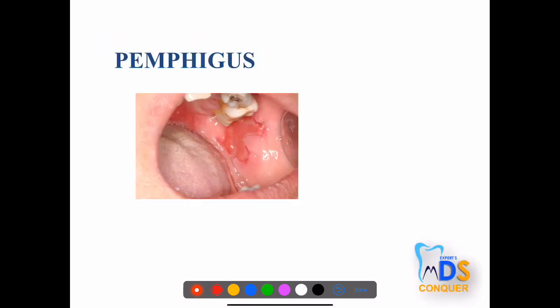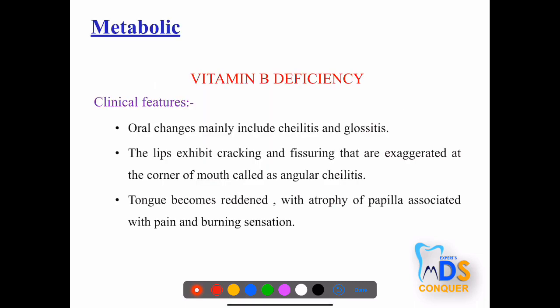Pemphigus shows flaccid bullae which rupture and leave an ulcerative lesion with tissue tags present around the erythematous reddish lesion — tissue tags are an important diagnostic feature of pemphigus.